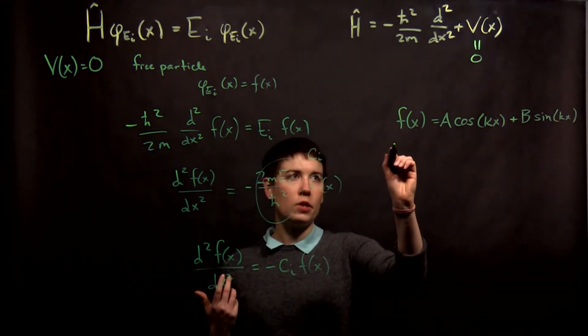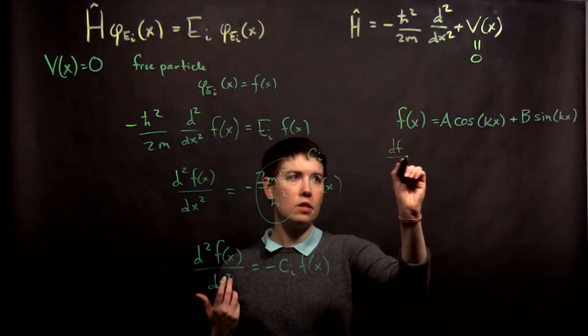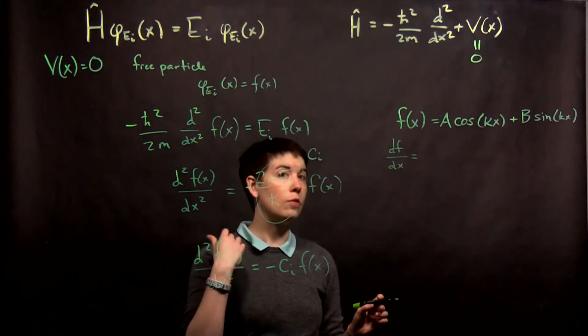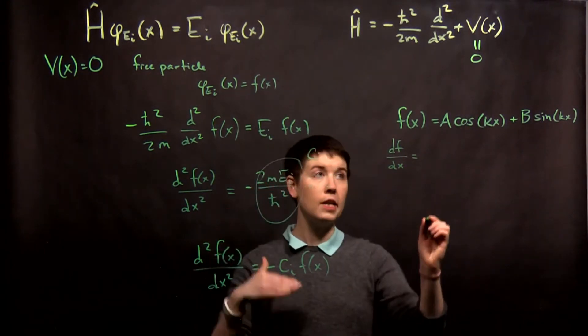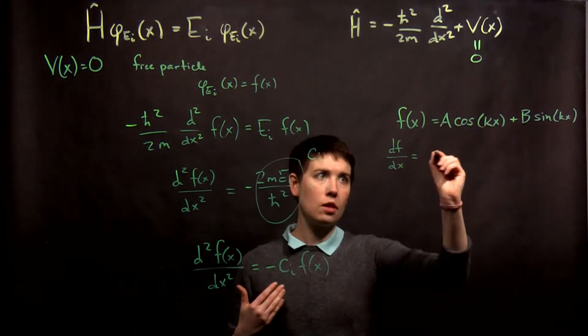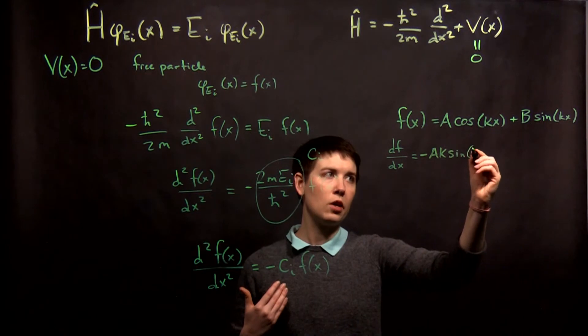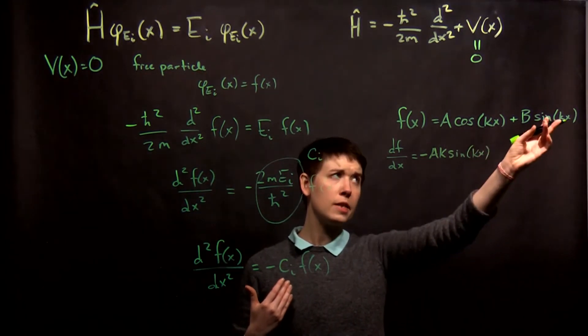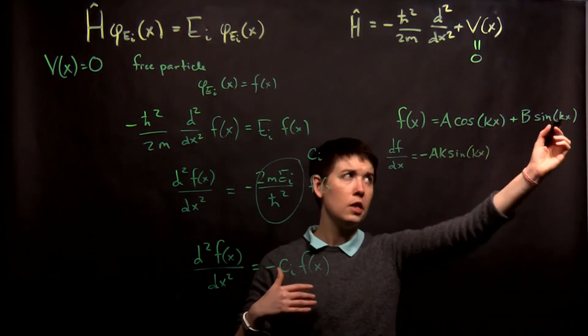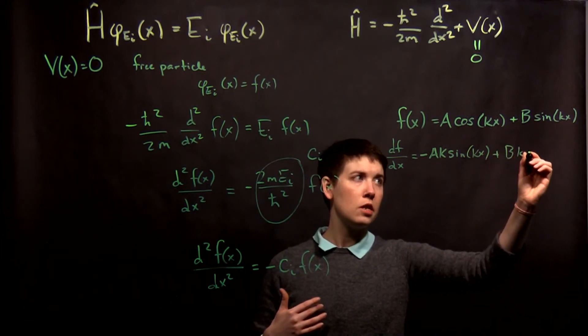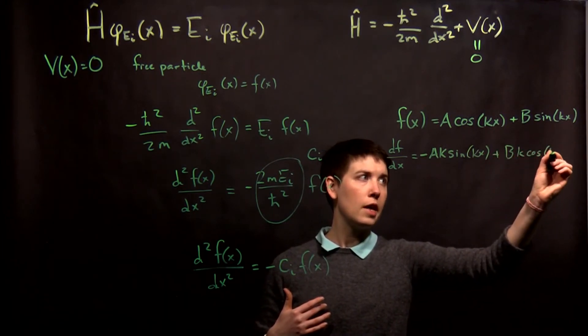So when I take my first derivative, so df/dx, when I take my derivative of cosine that's going to become negative sine but then this k comes out. So I have negative A k sine of kx and then when I take the derivative of sine I get cosine again that k comes out. So B k cosine kx.